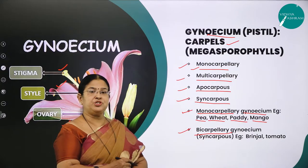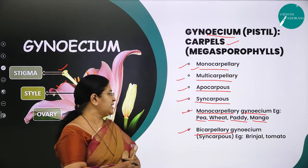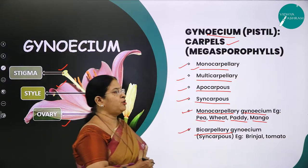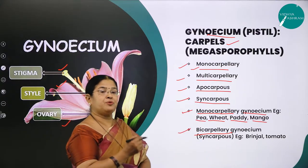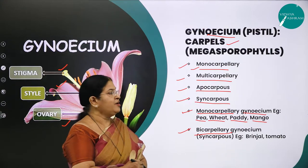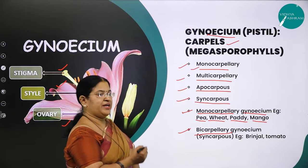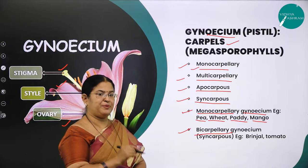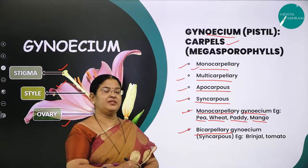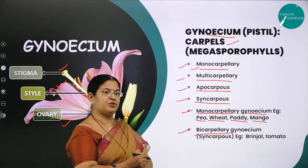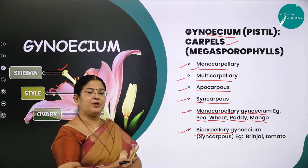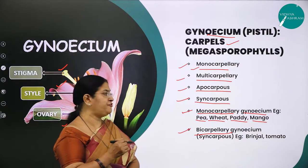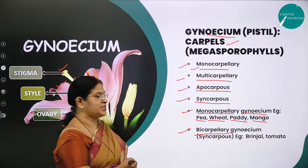When the gynoecium or pistil contains two carpels, we use the word bicarpellary. Based on the number of carpels, we classify gynoecium into: monocarpellary (one carpel), multicarpellary (more than two carpels), apocarpous (carpels free), and syncarpous (carpels fused). Examples of monocarpellary gynoecium are pea, wheat, paddy, and mango.